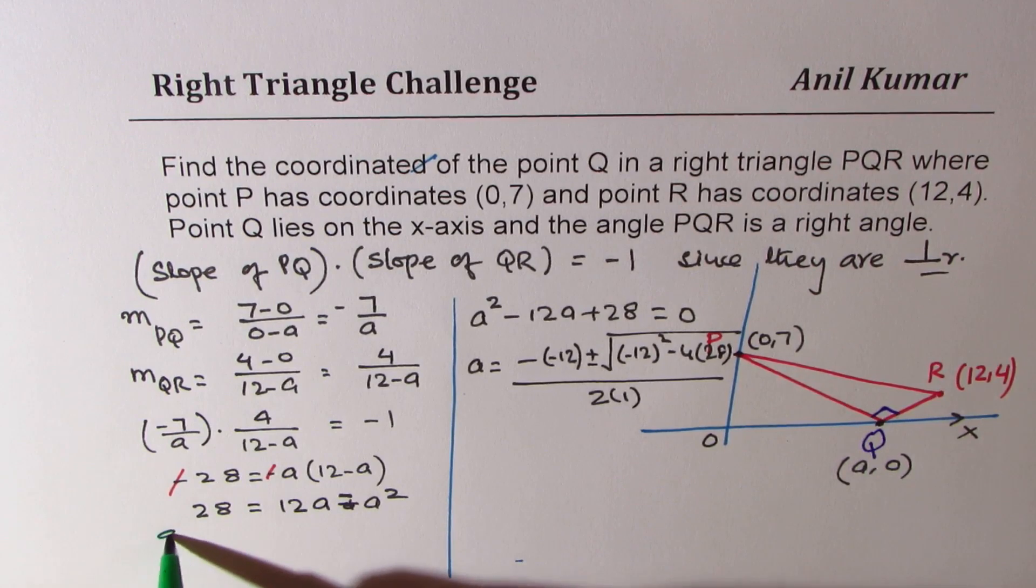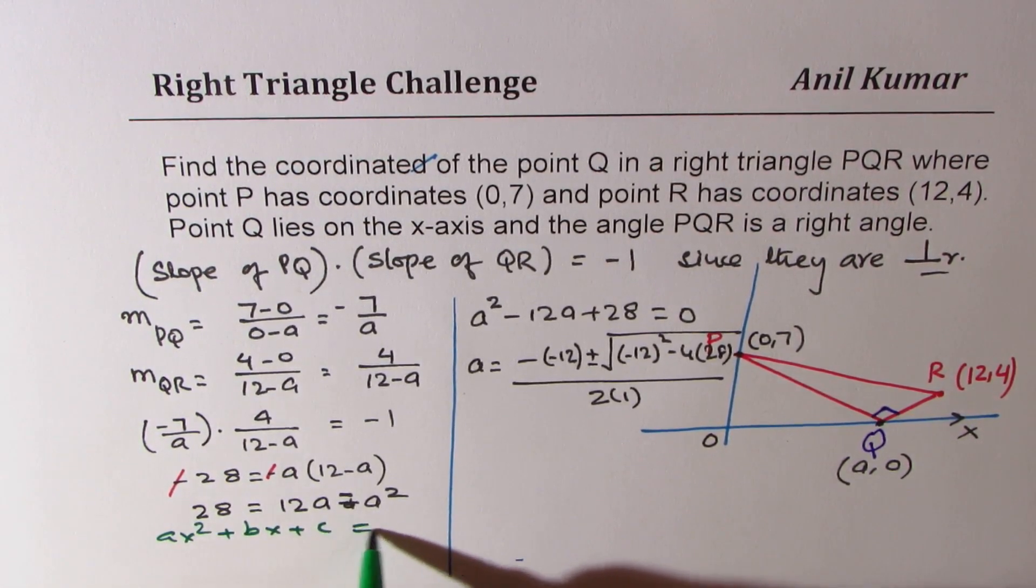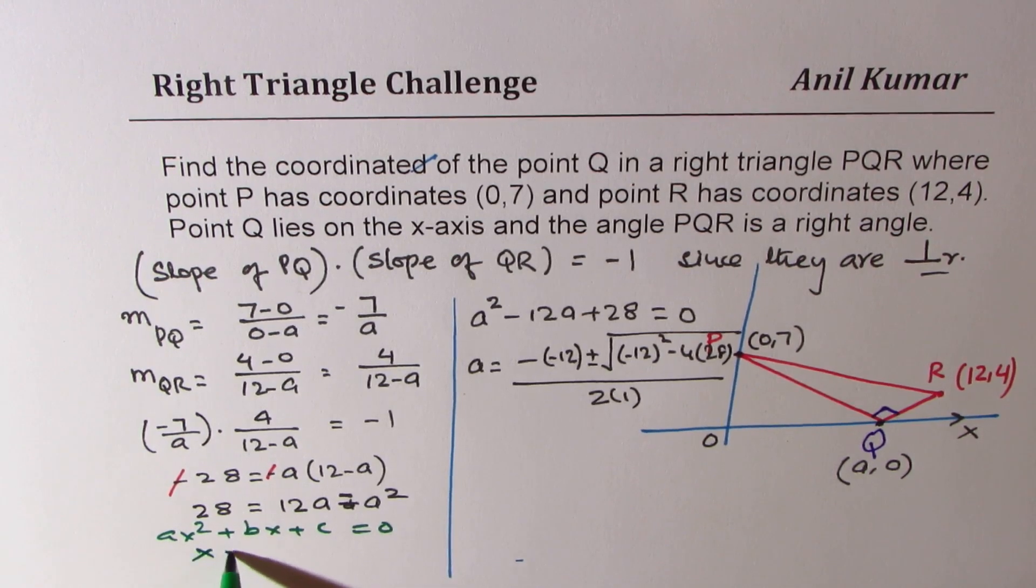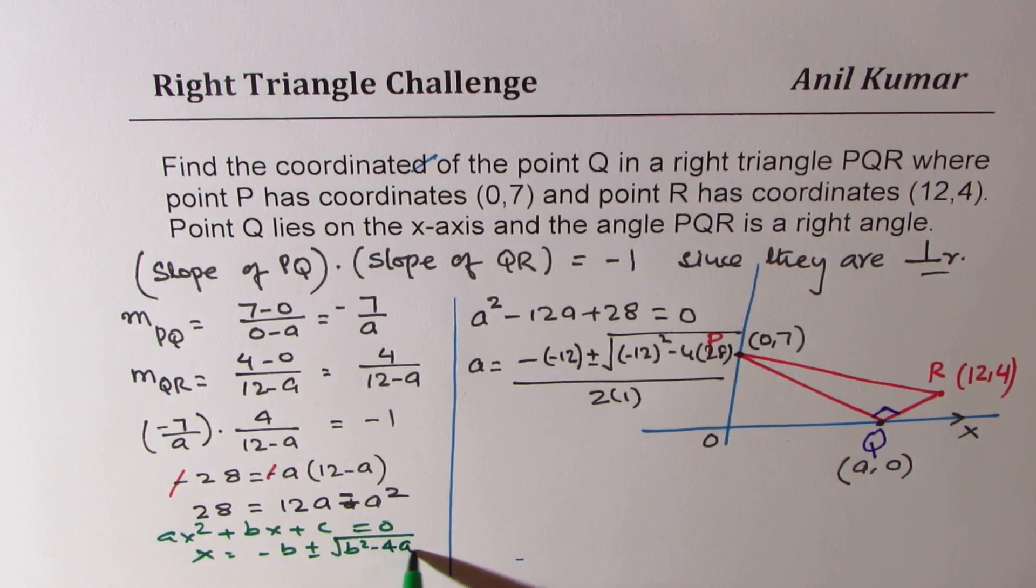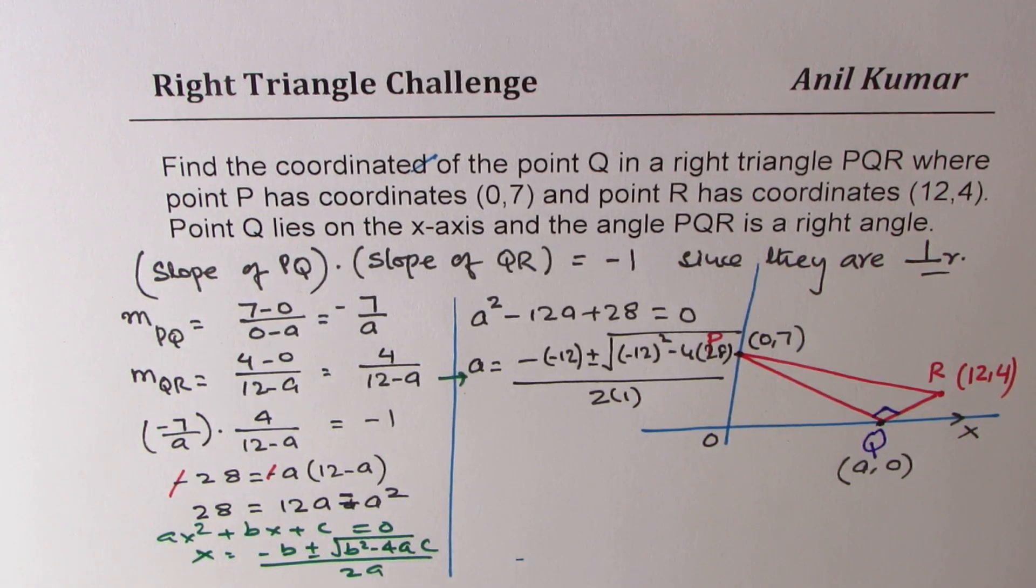So if the equation is ax square plus bx plus c equals to 0, then x equals to minus b plus minus square root of b square minus 4ac over 2a. So we have used this equation here. I mean, roots of the equation to find the solution.